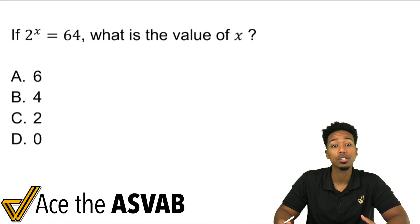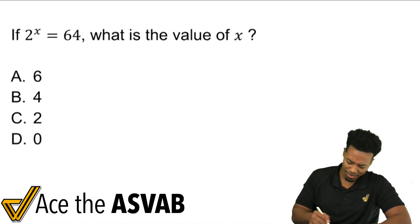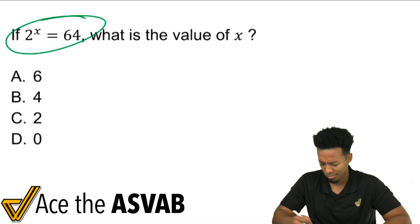Let's take the ASVAB. So the question here is, if two to the power of x equals 64, what's x?